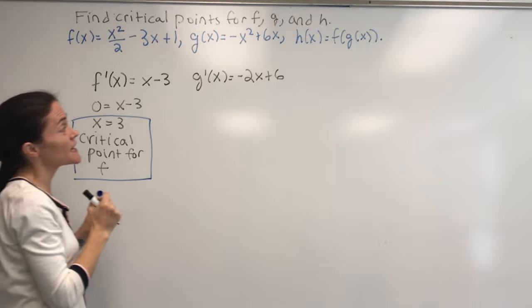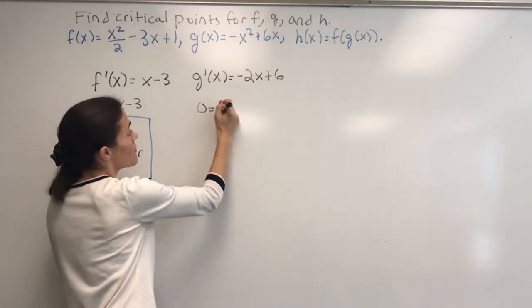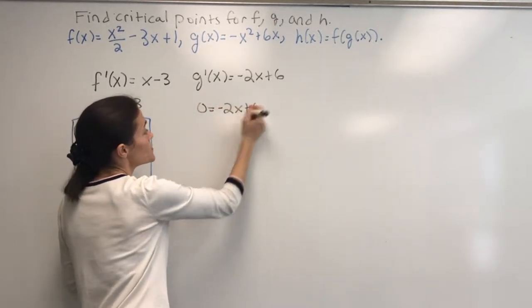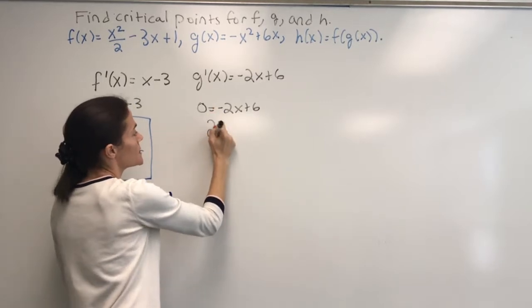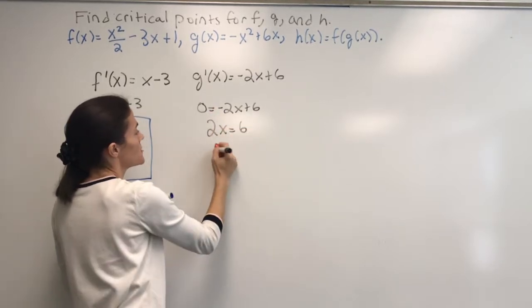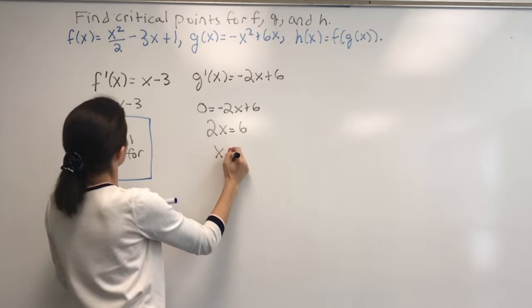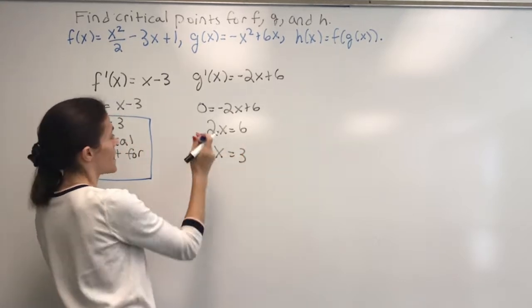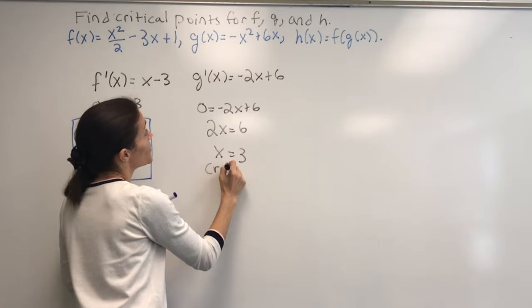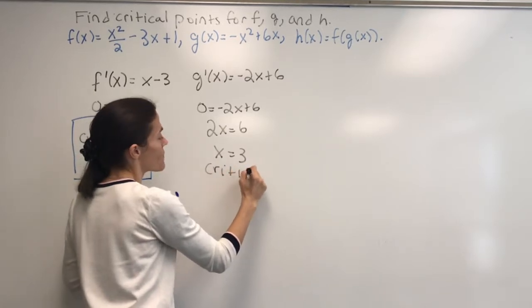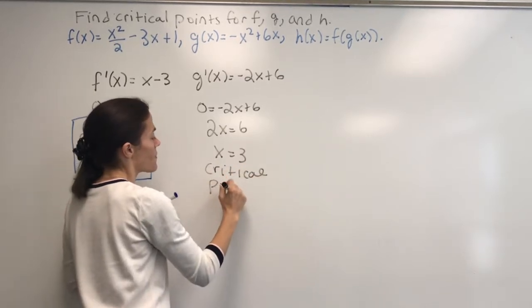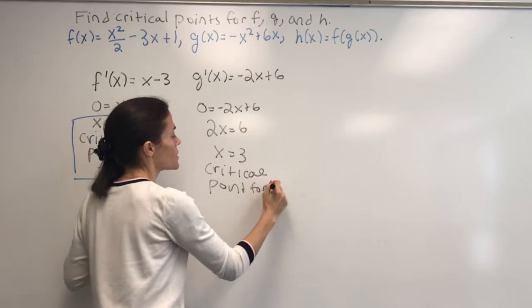For g, again, this is setting the derivative to zero, and we get 2x is 6 or x is 3. I'm going to get the same one. Critical point for g.